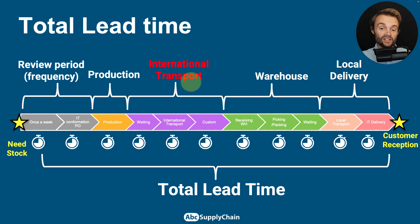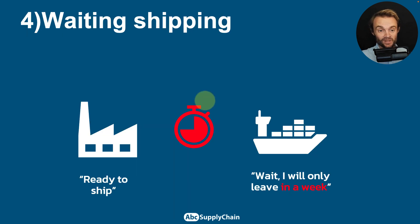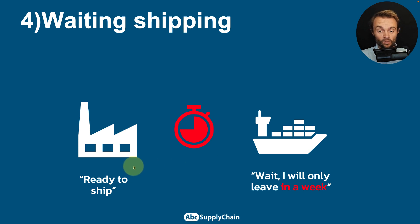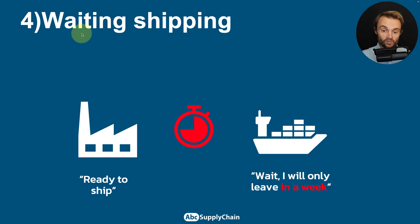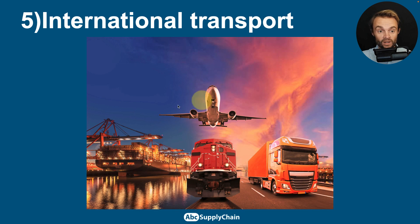Next is the international transport lead time. But before even shipping, you often have to wait — for example, if you have a factory in Vietnam shipping to Los Angeles but only one sea freight vessel per week, you must wait before your products can be loaded. This waiting time exists throughout the supply chain and must be considered. Then you have the actual international transport — by boat, plane, or truck — and all of these should be tracked.